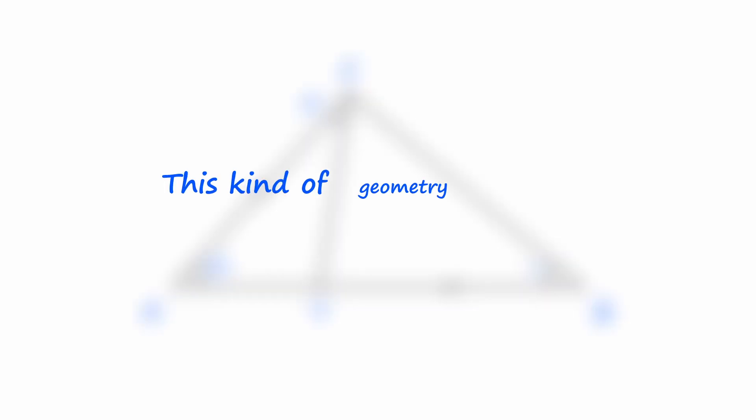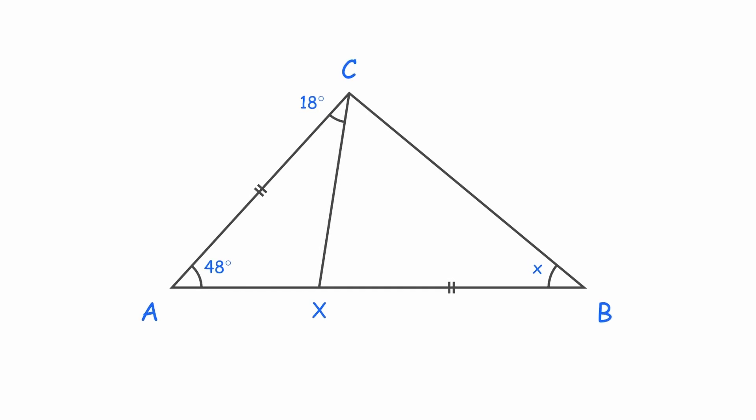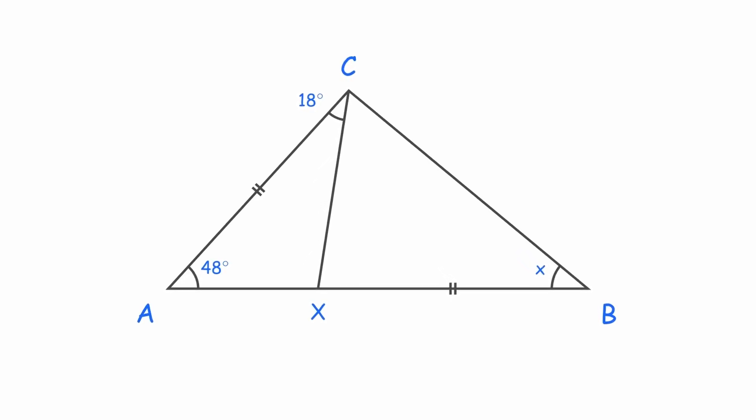This kind of geometry problem usually hinges on a clever construction. Once that's cracked, the rest becomes easy. In problems like this, we often try to form an isosceles triangle using line segments, and that's exactly what we'll do.